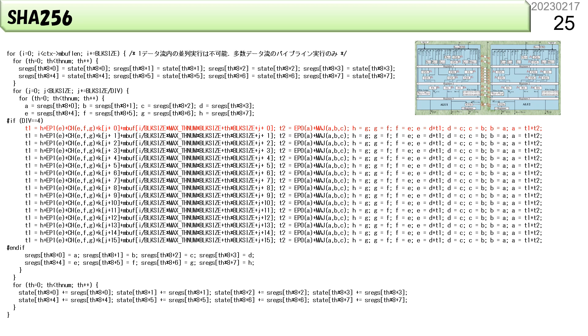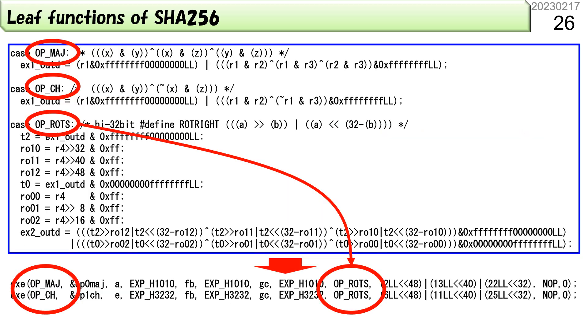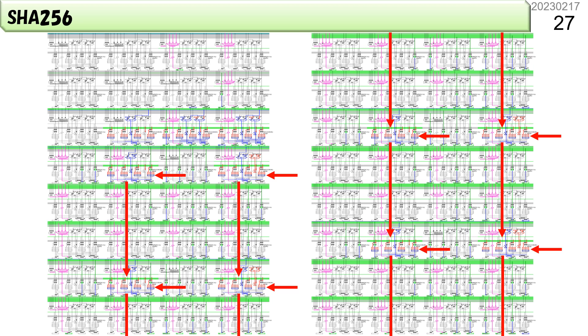In SHA256 for blockchain, the same statement repeats many times to calculate the hash value. The leaf functions are moj, ch, and ep0. We can see a lot of bit rotation in exclusive OR. The pipelined ALU in IMAX3 has four input moj and rotz and ch and rotz operations. This is the mapping result. Most of the five input ALUs are fully employed for special operations.